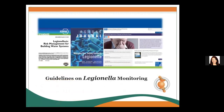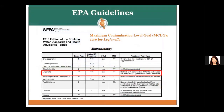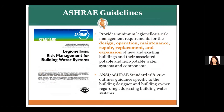You might wonder if there are any guidelines or regulations for Legionella. Currently, there are no hard lines or standards for Legionella contamination. However, multiple organizations have guidelines. EPA has a maximum contamination level goal of zero for Legionella, meaning it is recommended that water systems should not have any Legionella, though it is not mandatory. ASHRAE has guidelines focusing on design, operation, maintenance, repair, replacement, and expansion — essentially prevention and control of Legionella.